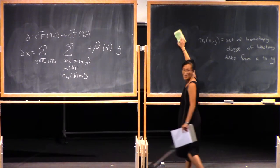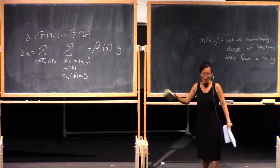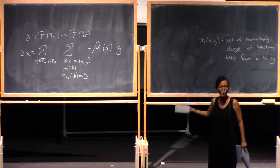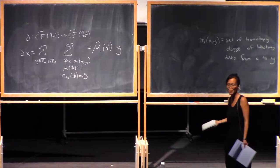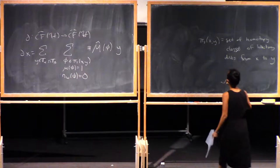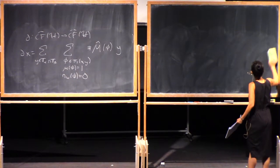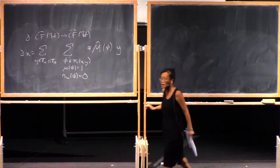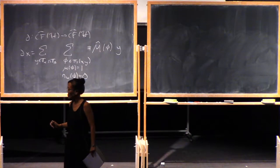Are you working over F_2 just to avoid signs? Yes, I'm working over F_2 to avoid signs. You can do this with signs — you can do this over Z. And yes, we're assuming we're sufficiently generic so that the expected dimension is the actual dimension.